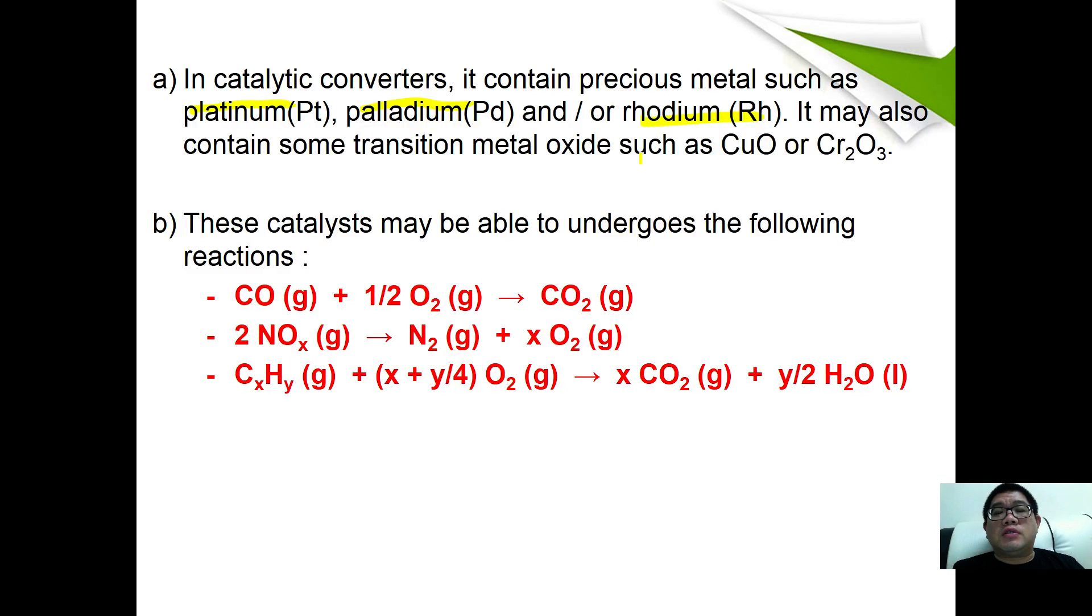The chemical reactions taking place inside catalytic converters are either oxidizing carbon monoxide to become carbon dioxide, or reducing NOx gas into nitrogen and oxygen. NOx can be monoxide or dioxide depending on what you use. Unburnt hydrocarbon will also be converted to become carbon dioxide and water. That is all for the effects on the environment and how we overcome them.